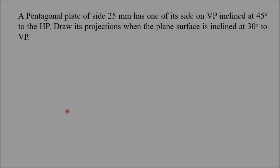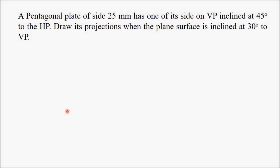Welcome. In this video we will draw orthographic projections of an oblique plane. The given oblique plane is a pentagonal plate of side 25 mm. One of its sides is on VP and inclined at 45 degrees to the HP, and the plane surface is inclined at 30 degrees to VP.